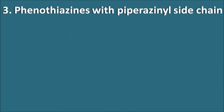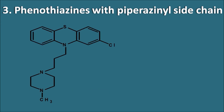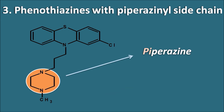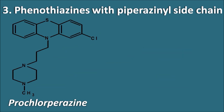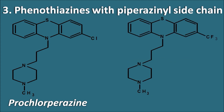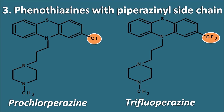Phenothiazines with the piperazine side chain: the piperazine ring system is present in these structures, and all drugs in this category end with the suffix '-azine' derived from piperazine. The first structure is prochlorperazine — you can observe piperazine as the suffix. The second structure is trifluoperazine. Just like chlorpromazine and trifluopromazine, these two drugs differ only by the group at the second position: prochlorperazine has the chlorine group and trifluoperazine has the trifluoromethyl group.